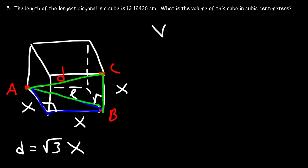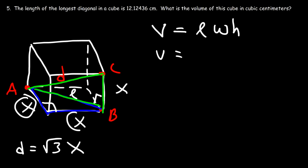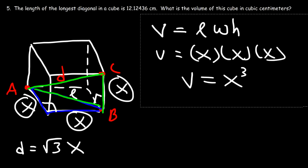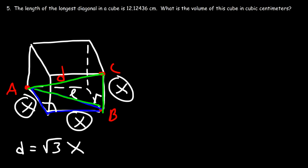The volume of a rectangular prism is length times width times height. For a cube, all three dimensions are x, so the volume of a cube is x cubed. We'll use that equation once we've solved for x using the diagonal formula.